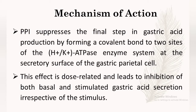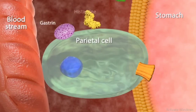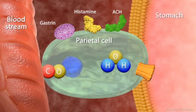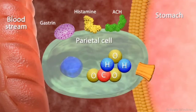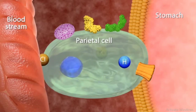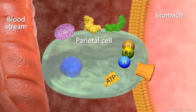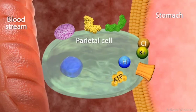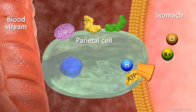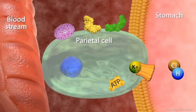You can better understand the mechanism of action by watching this animated video. The parietal cell is present in our stomach and gets activated by gastrin, histamine, and acetylcholine. First, carbon dioxide and water molecules bind to each other and then dissociate into hydrogen and bicarbonate ions. The bicarbonate ion exchanges with chloride ion, and chloride binds with potassium and exits into the lumen.